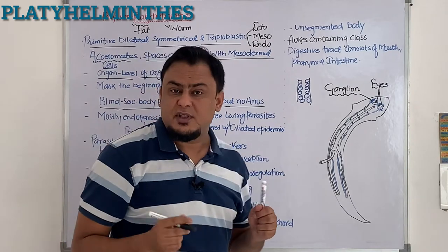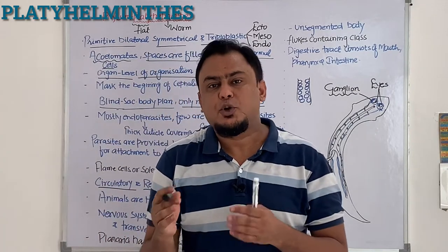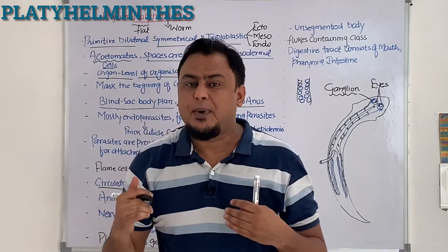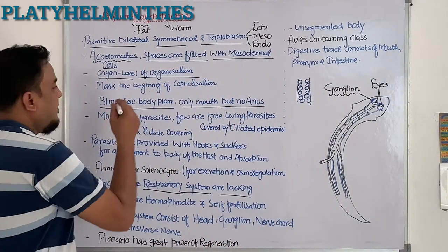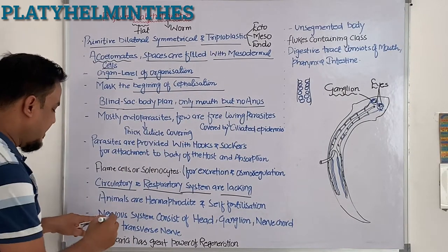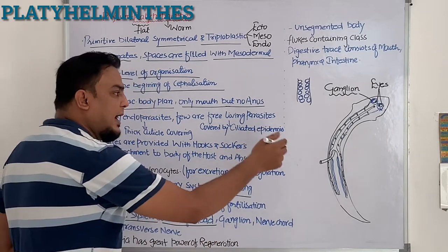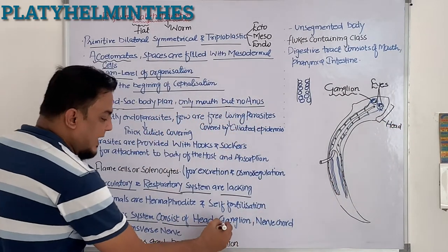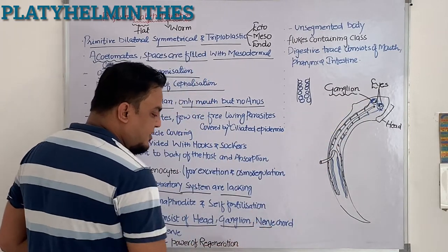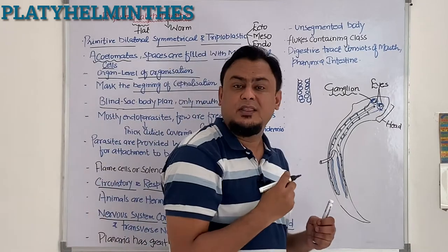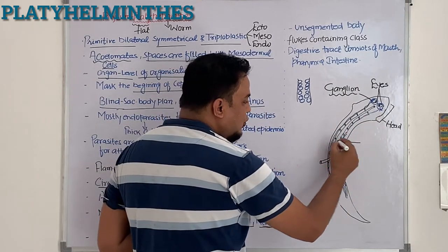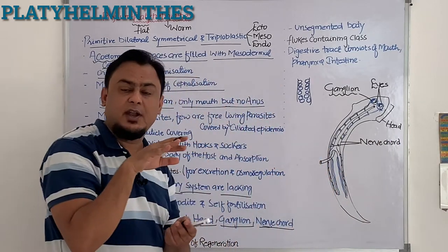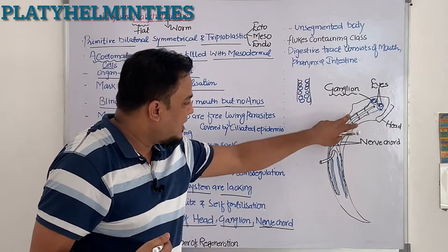Ganglion refers to masses of nerve cells. It stores information and passes information. This ganglion is present in the cephalized part of Platyhelminthes. The nervous system consists of: a head part, head ganglion, and nerve cord. The nerve cord is the entire structure running through the dorso-ventrally flat body.